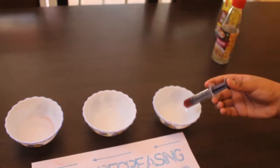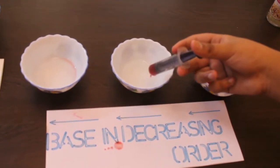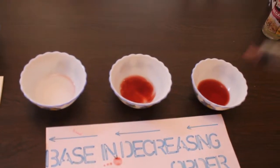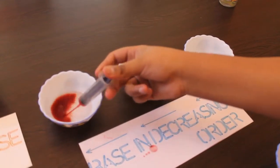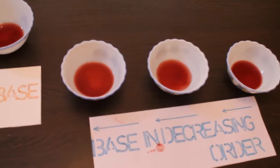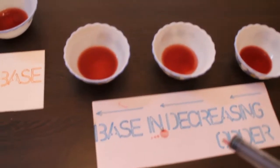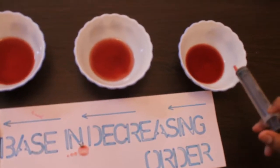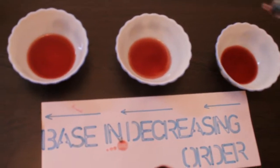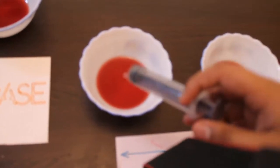So now I shall be putting it to the strongest. Now to the weaker. Now to the weakest. Now look at the color changes with the base in decreasing order of dilution. Here it has turned reddish brown which is very dark and here it is a little bit lighter and here it is even more lighter.